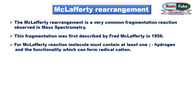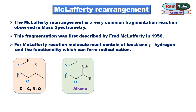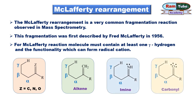For the McLafferty rearrangement, a molecule must contain at least one gamma hydrogen and a functionality which can form a radical cation. The general structure allows Z to be carbon, nitrogen, or oxygen — meaning these molecules are alkenes, imines, and carbonyl compounds. All these molecules satisfy both conditions: they contain at least one gamma hydrogen and have functionalities which can form radical cations.